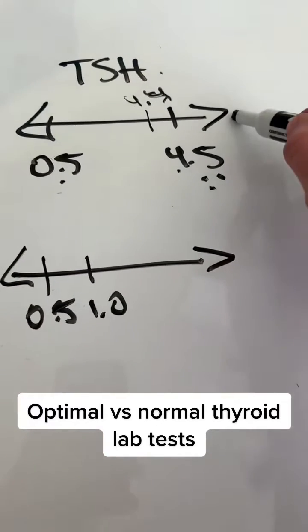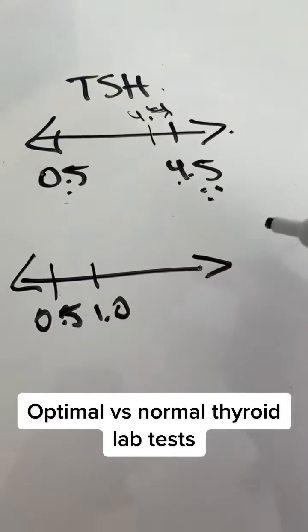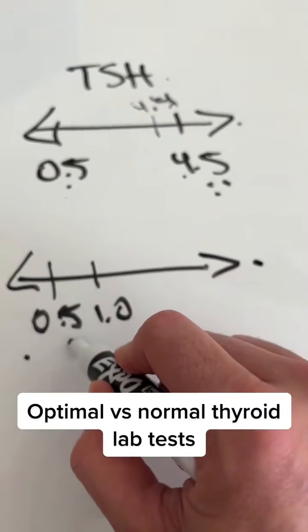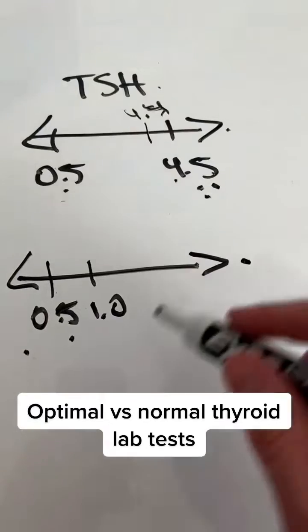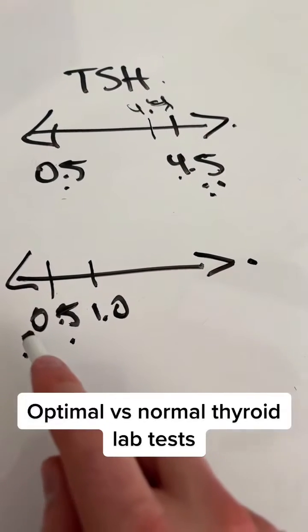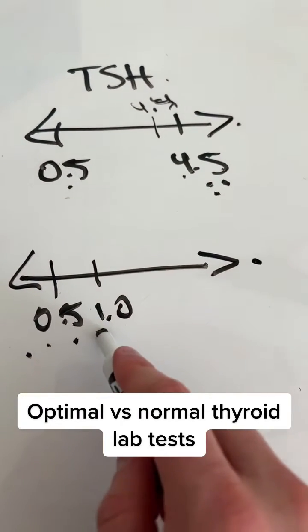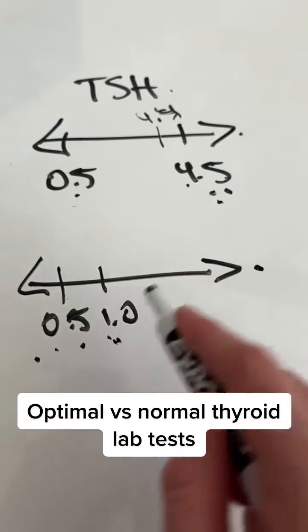So we're taking the broad range, which is the normal range, and we're comparing you to the optimal range, which is a more narrow range. So instead of being between 0.5 and 4.5, what we're saying is if you want to be healthy, you need to be between 0.5 and 1.0. And this represents the optimal range.